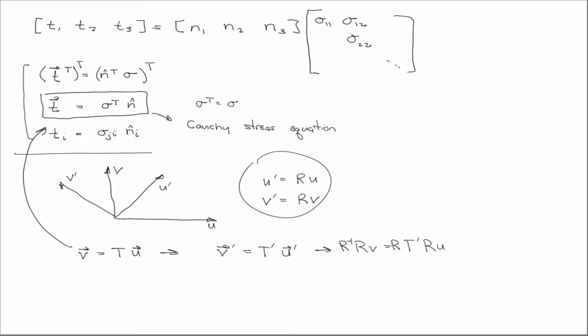We know that a matrix inverse times itself is the identity matrix, right? So then we just have that v is equal to R inverse t prime R u. And we said before that R is a unitary matrix. Its inverse is its transpose.